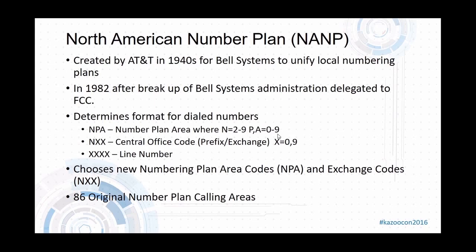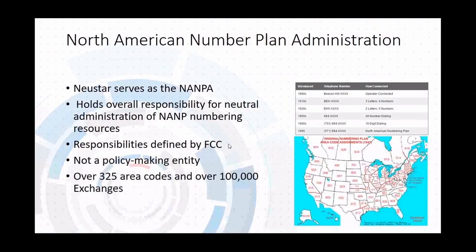The North American Numbering Plan Administrator, or NANPA, chooses new numbering plan codes and exchange codes. If in any given area they are running out of phone numbers or area codes, they assign them. The original plan consisted of 86 calling areas or area codes. Here you can see the original ones — for example, central to Northern California was 415, and now we have quite a bit more than that in that particular area.